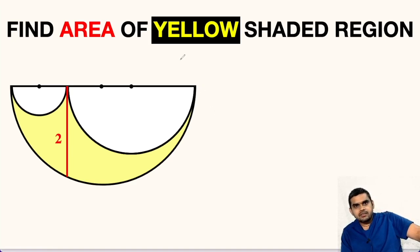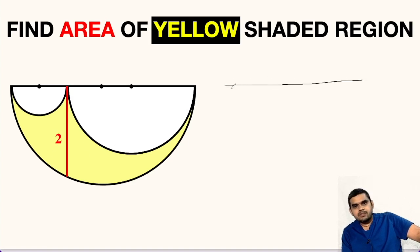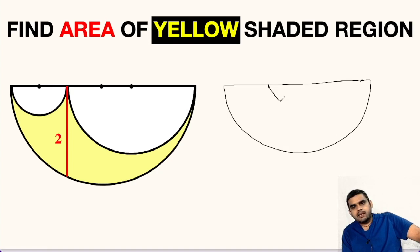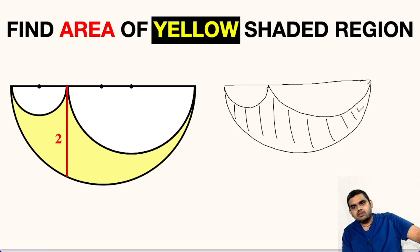In this question, we are asked to find the area of the yellow shaded region. By common sense, we will first compute the area of the big semicircle, then subtract the area of this semicircle, and also subtract the area of this semicircle. The remaining area will be the area of the yellow shaded region, and that will be our approach.